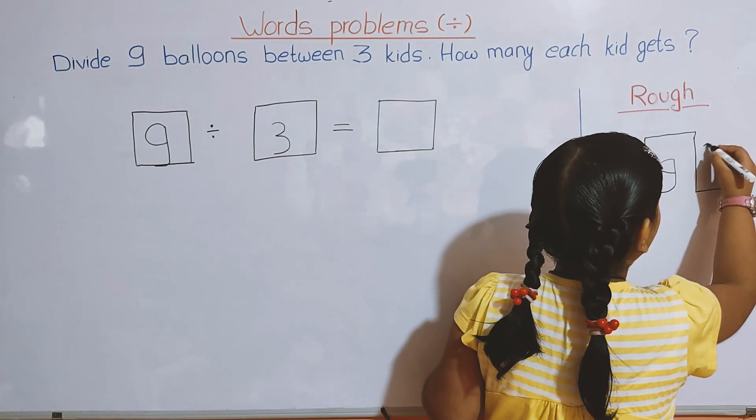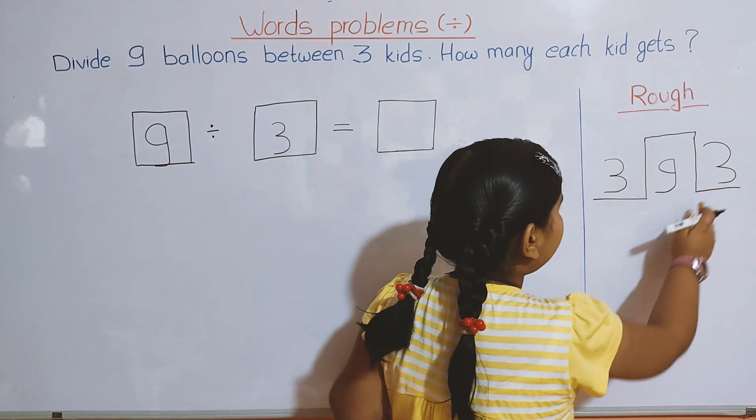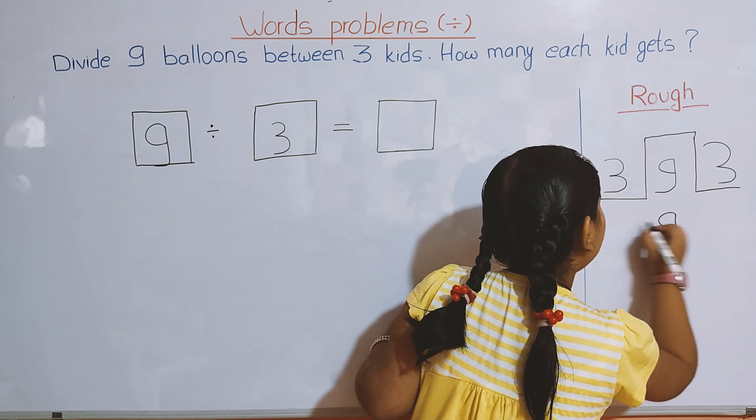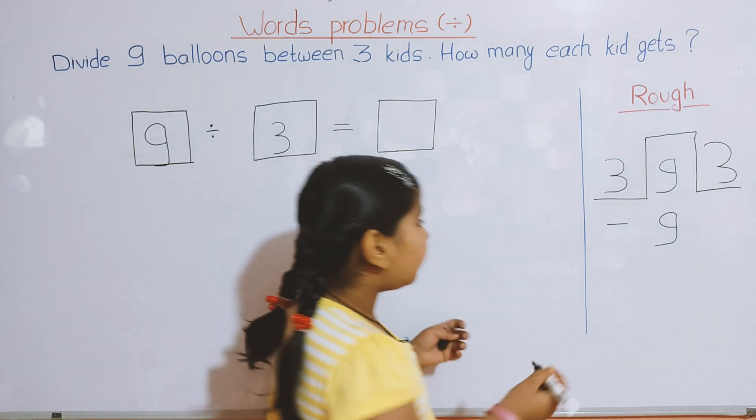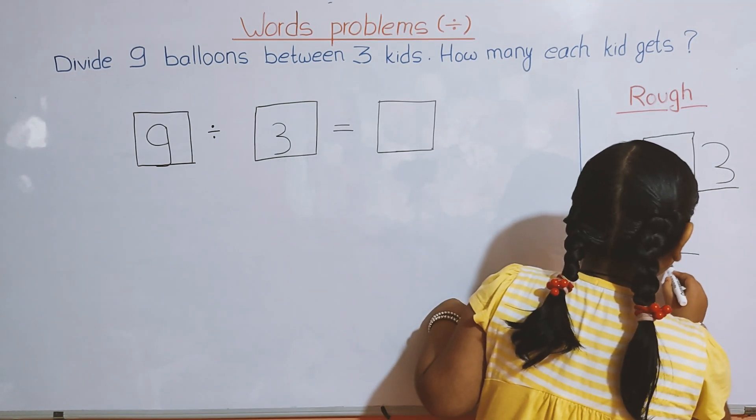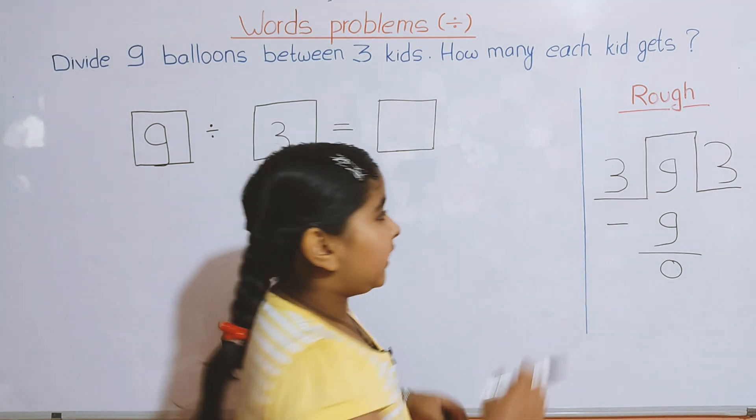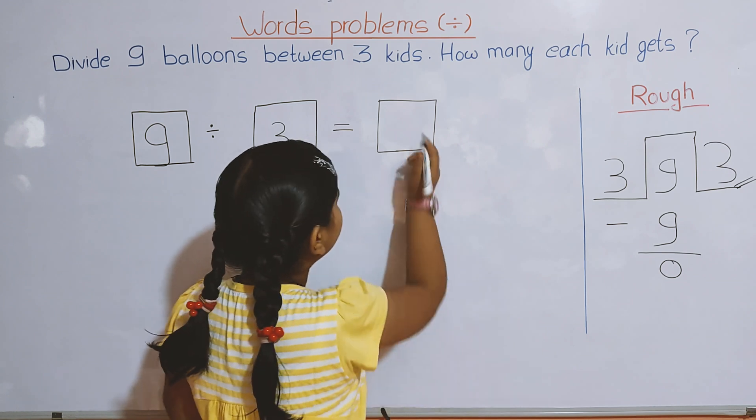So we write 3 here. And 3 threes are 9, we write 9 here again. And do minus. 9 minus 9 is 0. So we have our answer. The answer is 3. Let's write 3 in the box.